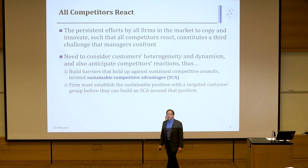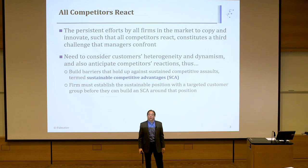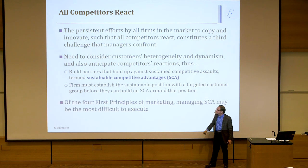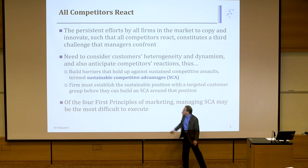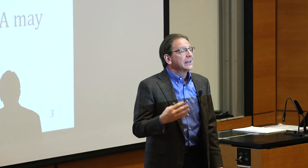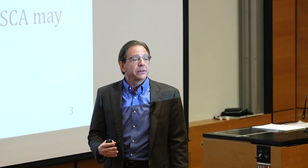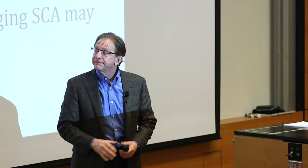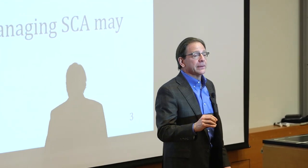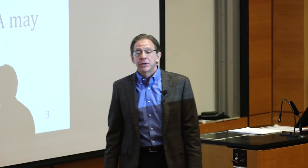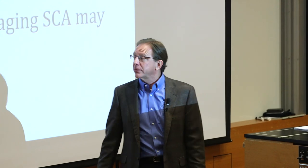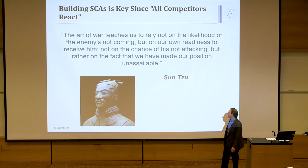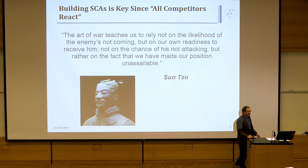You want to build walls around your business, and you also want to build a moat around your business, and that's going to protect you from competitors. Of the four first principles, probably the most difficult of the four is building sustainable competitive advantage. The first two principles — all customers differ, so you have to manage heterogeneity; all customers change, so you have to manage customer dynamics — those principles are pretty straightforward. This one, though, is very tough because you have very smart people at your competitors trying to do the same thing you're doing: trying to innovate, trying to build relationships, trying to build brands, trying to come after your customers. We're going to spend the next three sessions after this one on how to build a barrier around our business.